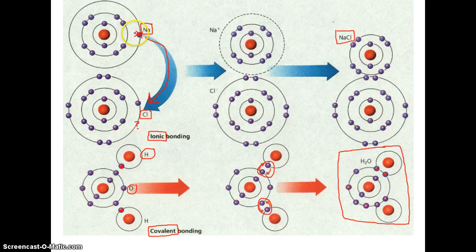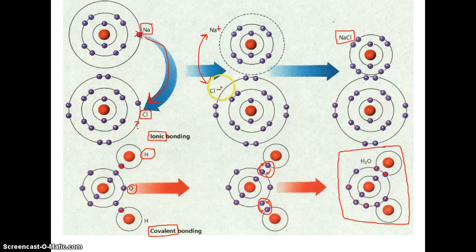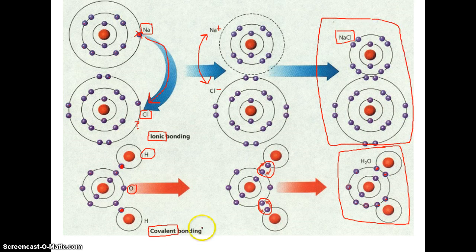When that happens, because that electron is a negative charge, sodium got rid of a negative and therefore became positive. And because chlorine picked up an extra negative, it became negatively charged. You've known for a long time that opposites attract — so now we have a positively charged sodium and a negatively charged chlorine. Because sodium completely gave one of its electrons to chlorine, they have opposite charges and will stick together to make a sodium chloride molecule.